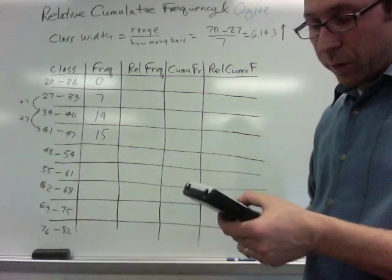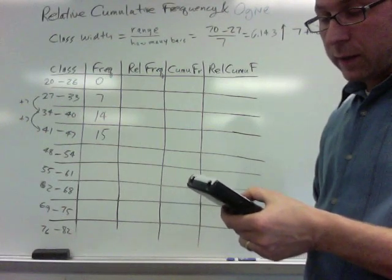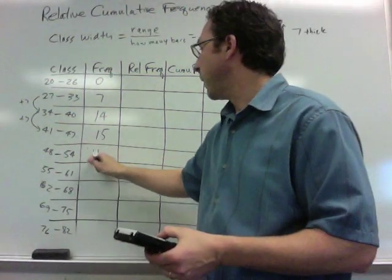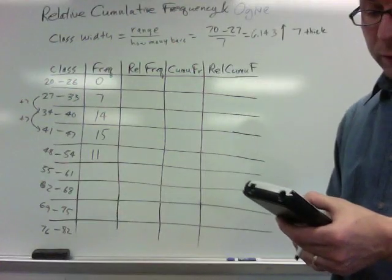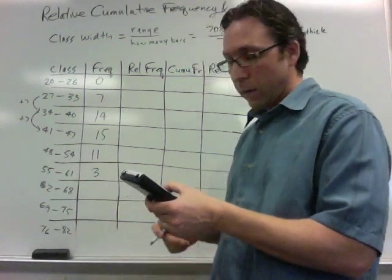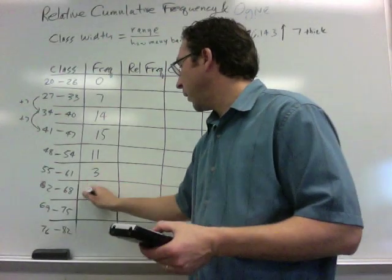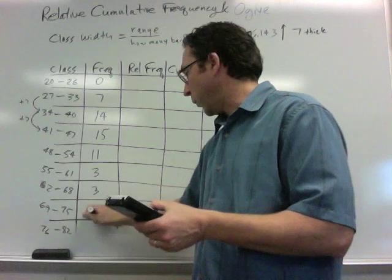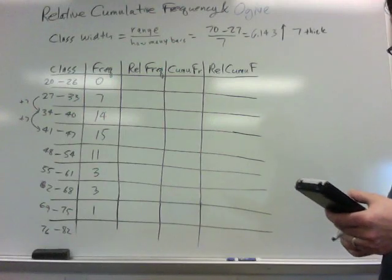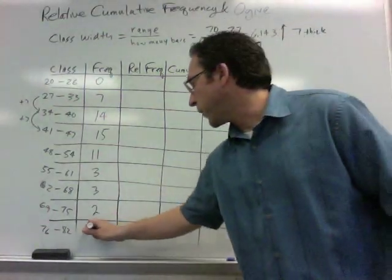So between 48 and 54: 1, 2, 3, 4, 5, 6, 7, 8, 9, 10, 11. From 55 to 61: 1, 2, 3, only 3. From 62 to 68: 1, 2, 3, only 3. And only one there at 69. Actually 70 also. How could I forget Benjamin Franklin? He probably was the 70 year old. And there were none in this category.